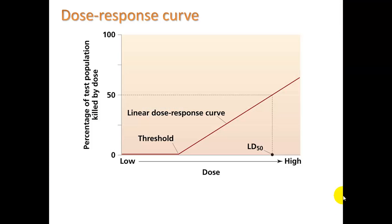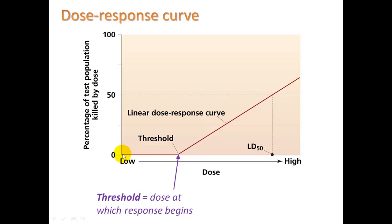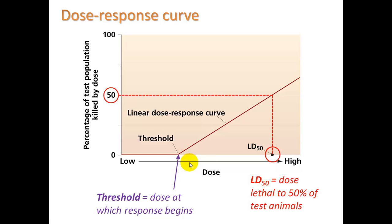Responses to doses are plotted on a dose response curve. Dose is on the horizontal axis; the response we're looking at is death. We're trying to figure out something called the LD50. Usually there is a threshold where you won't see any effect or death until a certain concentration or dose is reached, and anything above that will cause a response. The LD50 is what dose will cause death in 50% of the test animals. You find the 50% mark, go across, drop down, and see what dose makes half of them die. A substance with a higher LD50 is actually less toxic, because it takes a higher dose to kill half the test organisms. A chemical that is more toxic will have a smaller LD50 — it won't take as much to cause 50% to die.